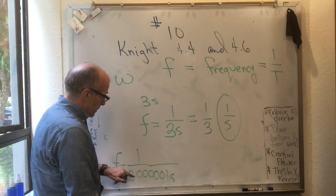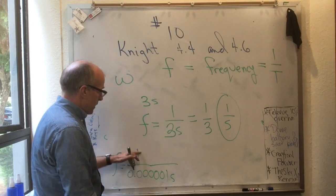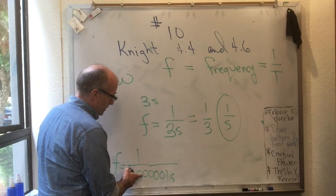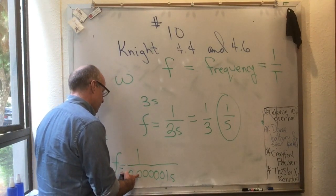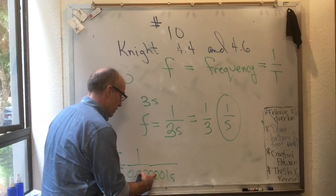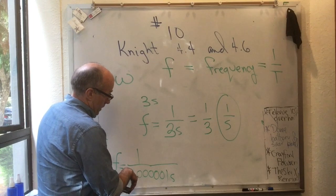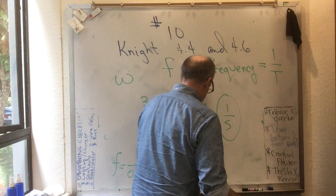If this was only 0.1, that would be 10. If it was 0.01, that would be 100. If it was 0.001, that would be 1,000. If it was 0.0001, that would be 10,000. If it was 0.00001, that would be 100,000. But if it's 0.0000001, that's equal to 1,000,000.